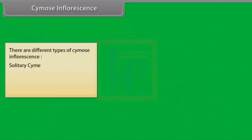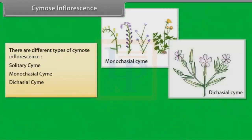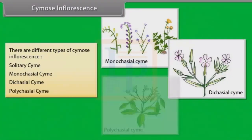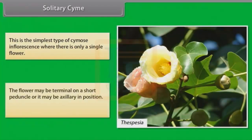There are different types of Chymos inflorescence: Solitary Chyme, Monocasial Chyme, Dicasial Chyme, and Polycasial Chyme. Solitary Chyme is the simplest type of Chymos inflorescence where there is only one single flower. The flower may be terminal on a short peduncle or it may be axillary in position. Example: Thespesia.